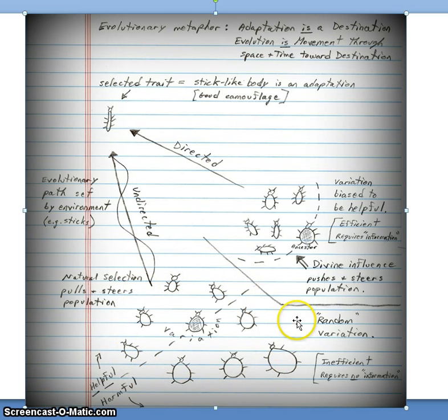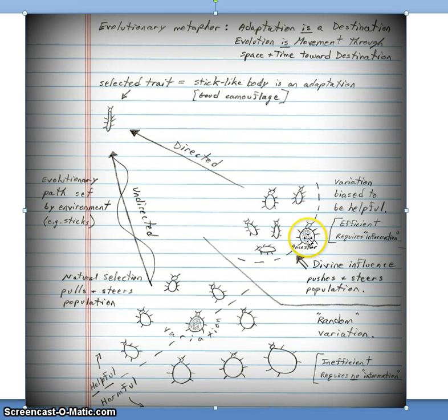The second note is about information. In the God version of the story, God has to know what the environment is like — that it's filled with sticks — in order to shape the reproduction of this ancestor. In other words, God already has to have the information that there are sticks in the environment so as to know how to bias the reproduction, to tweak the reproductive process to skew the offspring so that they're all thinner than the parent. God must have information about the nature of the environment in order to make the ancestor have better adapted offspring.